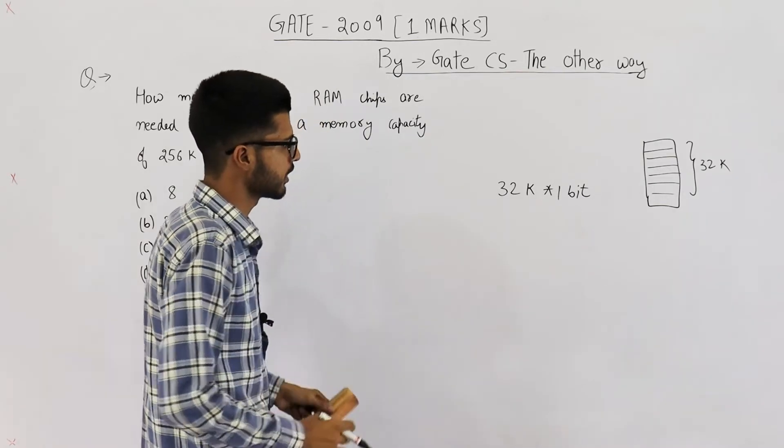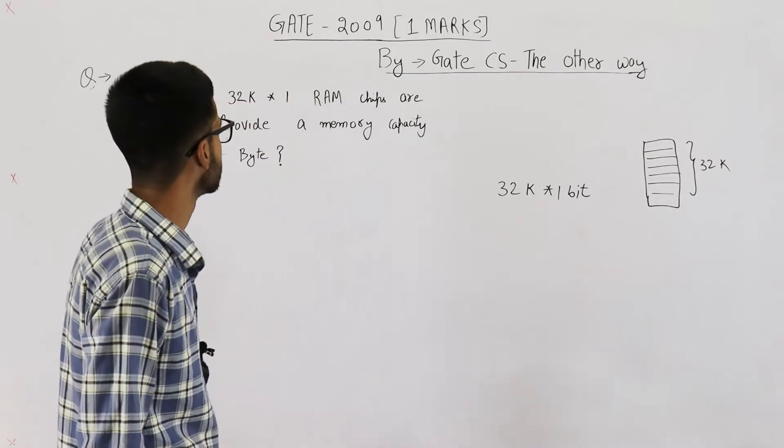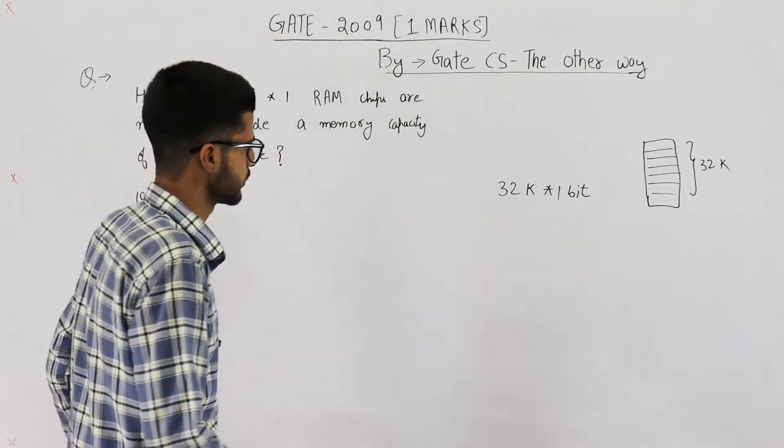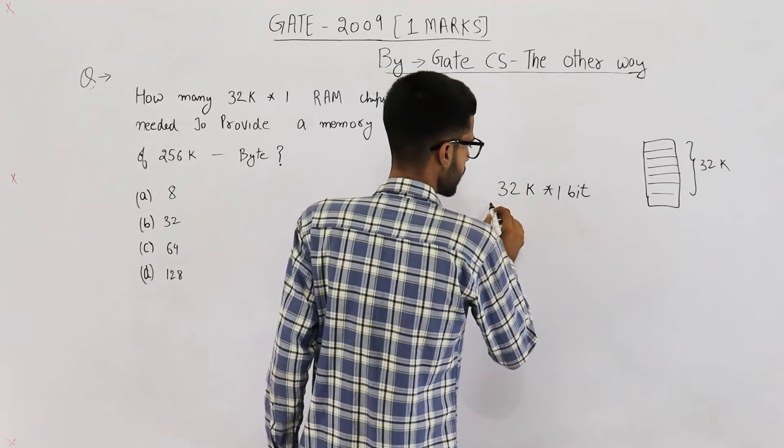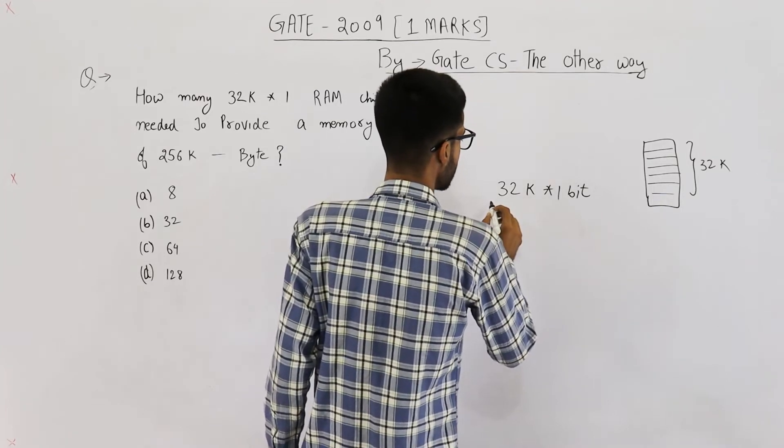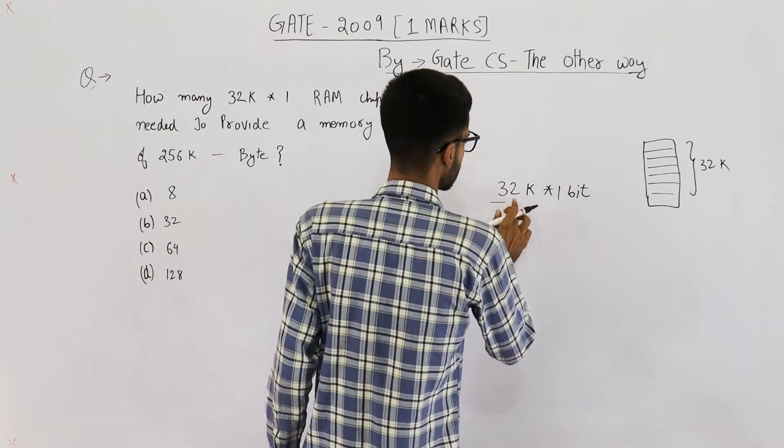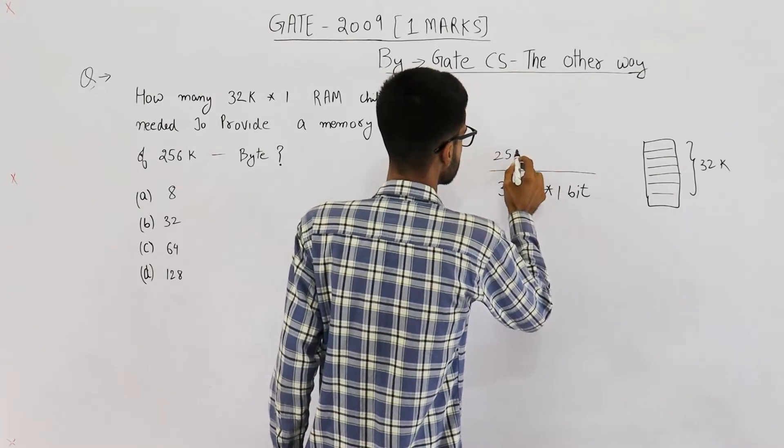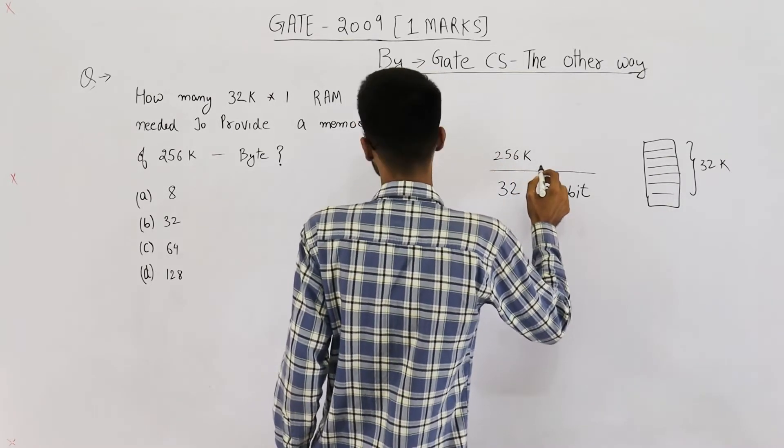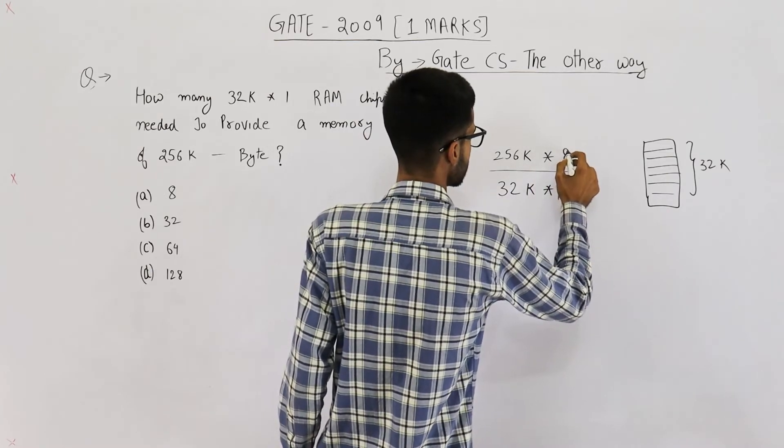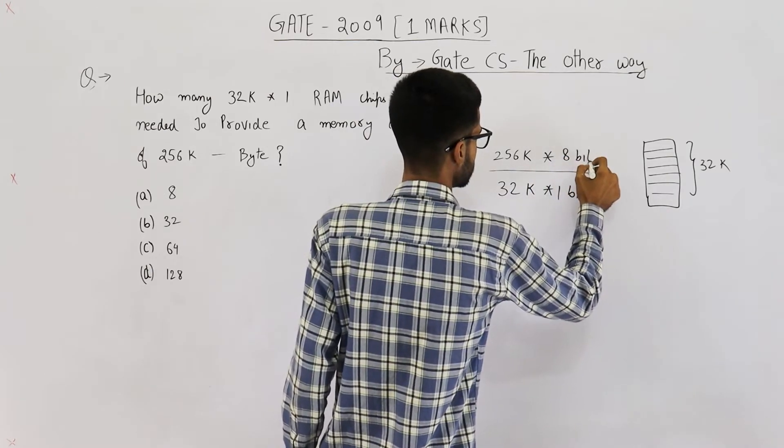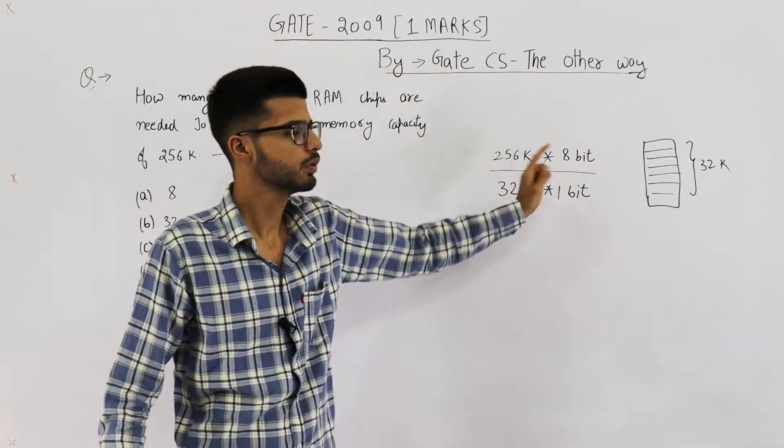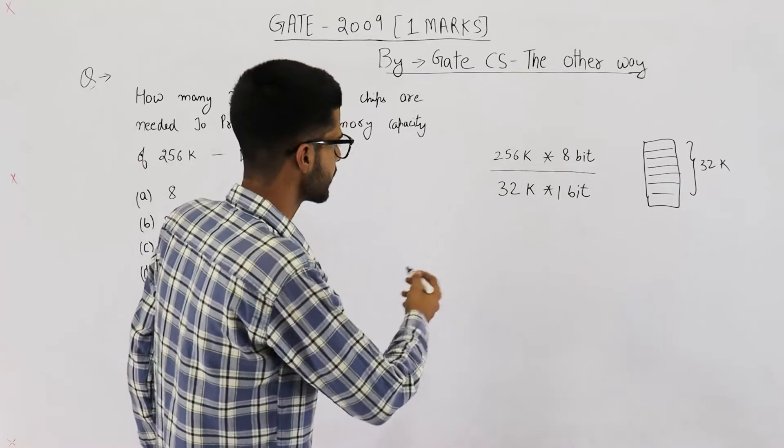So the answer to this question will be this divided by this. That means 32k x 1 divided by, sorry, 256k x 8 bit. 1 byte can be converted into 8 bits. So just solve it.